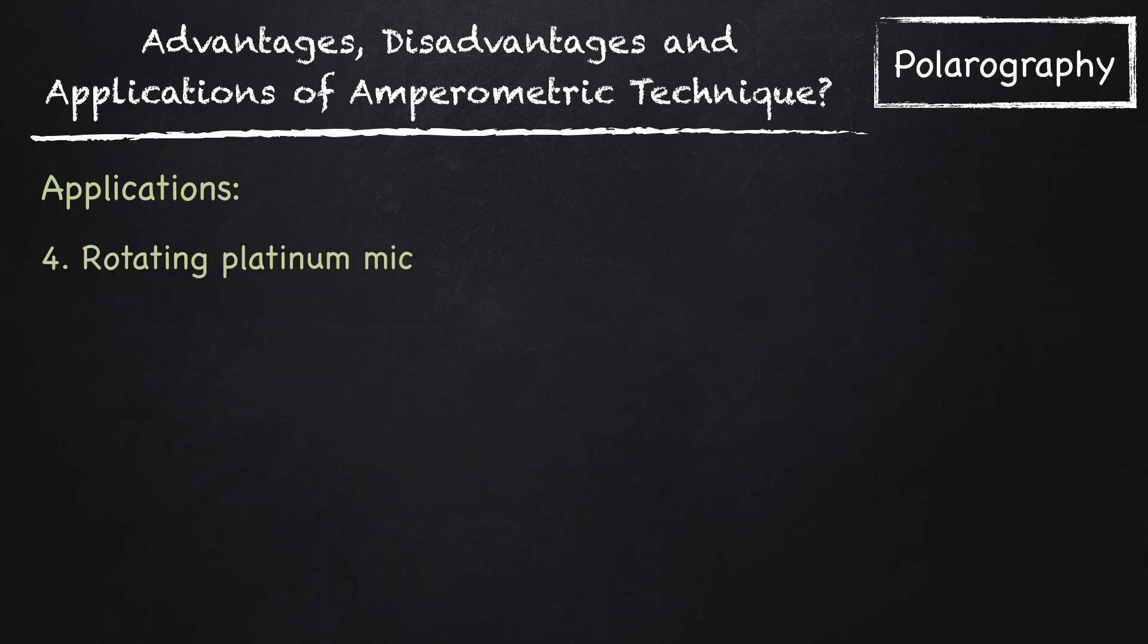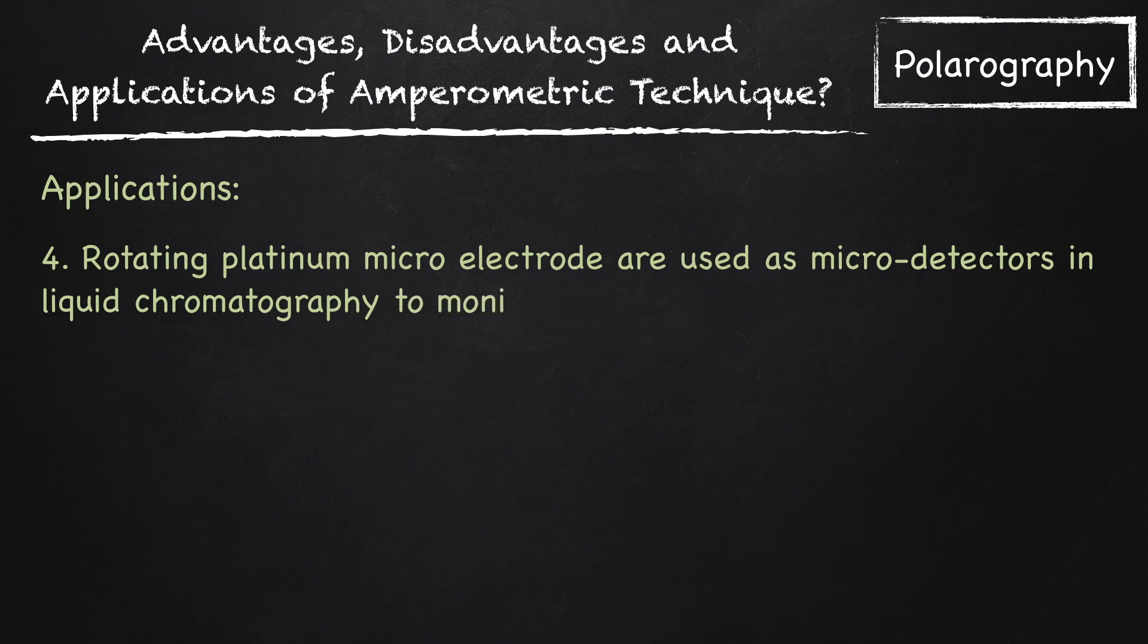And the fourth, rotating platinum microelectrodes are used as micro detectors in liquid chromatography to monitor elution of reducible substances.